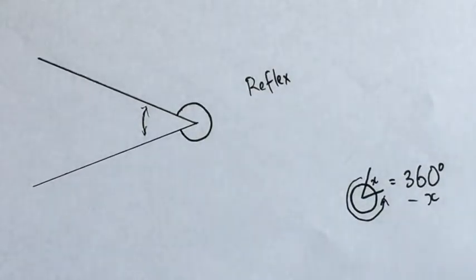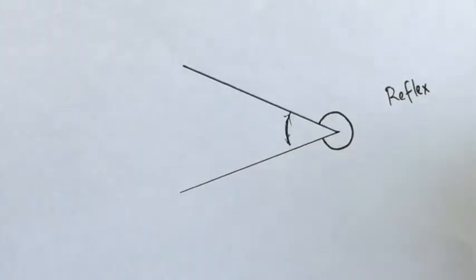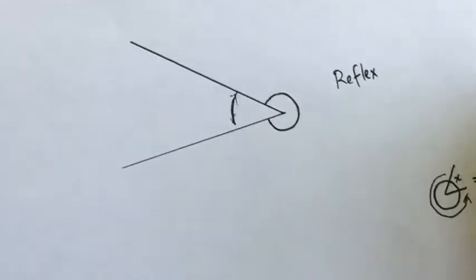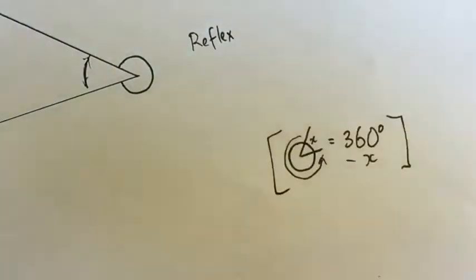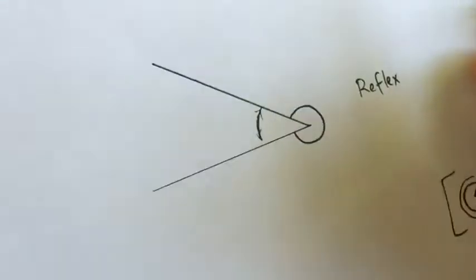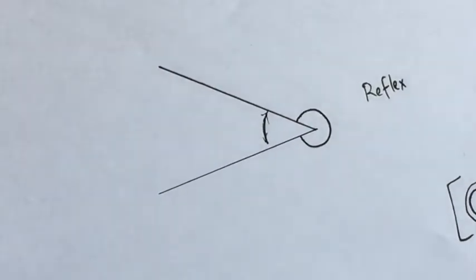So what we're going to do is measure this smaller angle on the inside there, and then we're going to subtract it from 360. That will give us that reflex angle amount right there. So let's do that.